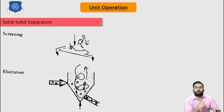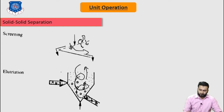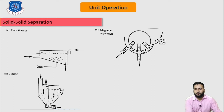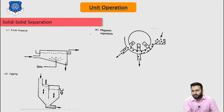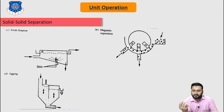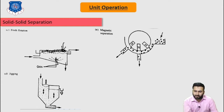The next method is froth flotation, which is mostly used to remove suspended particles from water. Gas is passed through, creating a froth force. This froth collects small particles of metal, which can be collected from the upper side, and the clear liquid is obtained below.